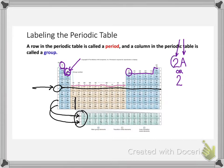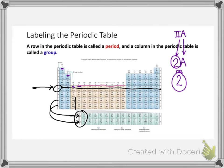On some periodic tables this number will be a Roman numeral, so 2A would have Roman numeral II and an A. That's the more traditional way. The modern way of labeling is simply using the numbers 1 through 18. So each group can be identified either with a number and a letter — like 4A — or just a number, like 14. Get in the practice of using the word 'period' for rows and 'group' for columns.